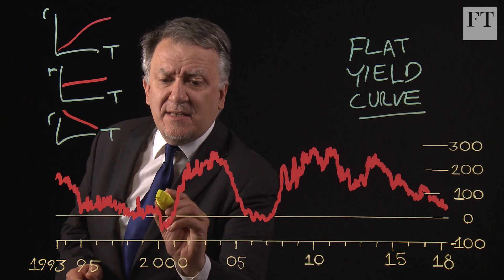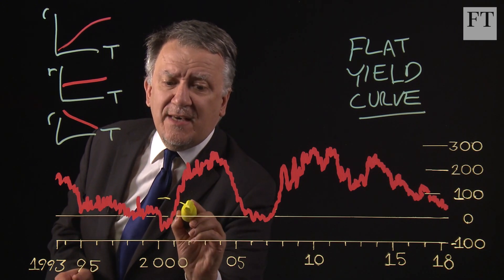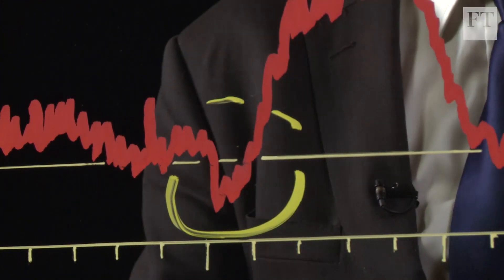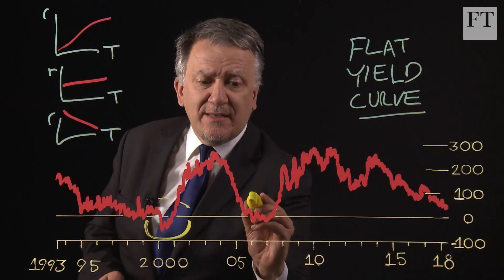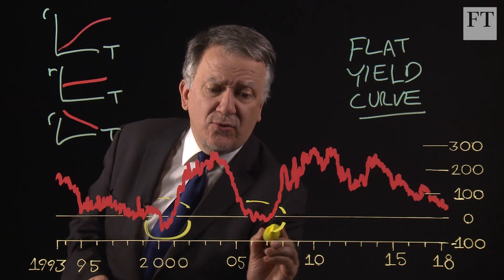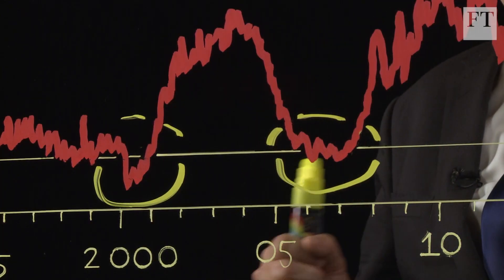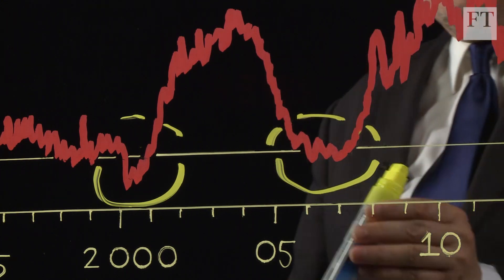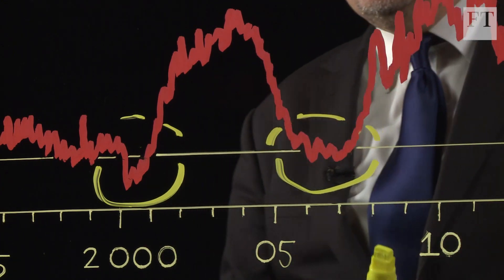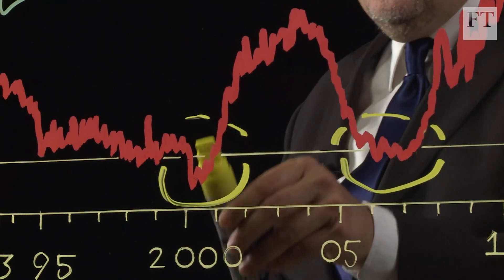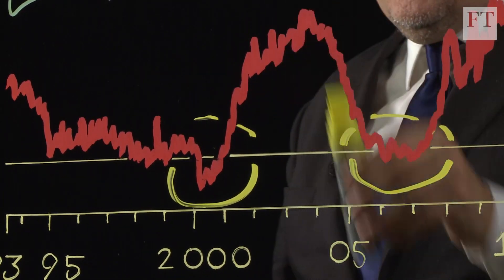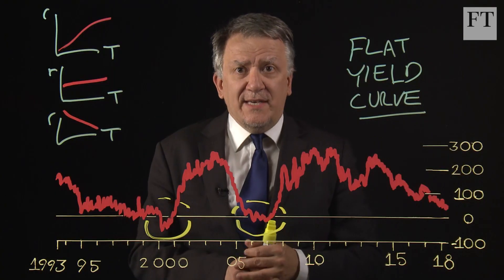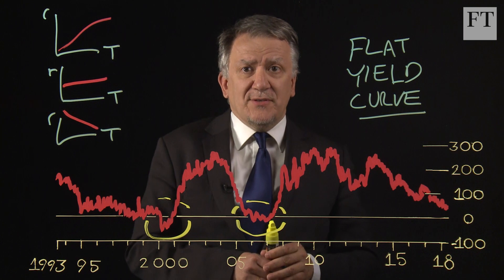If you take a look at the yield curve over the last 25 years — this shows you the gap between 10 and 2 year yields in the US treasury market — you can see that there are only two periods in that whole quarter of a century when the yield curve has been inverted for any period of time. They came before the two big financial crises and recessions: the dot-com burst followed by the recession of the early 2000s, and then before the great financial crisis and the great recession later in the 2000s.